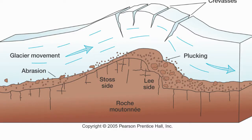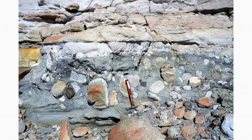Now that we know how glaciers form and how they move, let's talk about how they move rocks and sediments and deposit them. Since glaciers are huge massive bodies of ice moving slowly, they tend to break up any rock in their way, including bedrock — usually at the bottom of the glacier. This process is called abrasion. As the rocks and sediment are being broken up, they are also being carried away by the glacier. Glaciers then deposit these rocks into different deposits called tills, tillite or diamictite, and moraines.